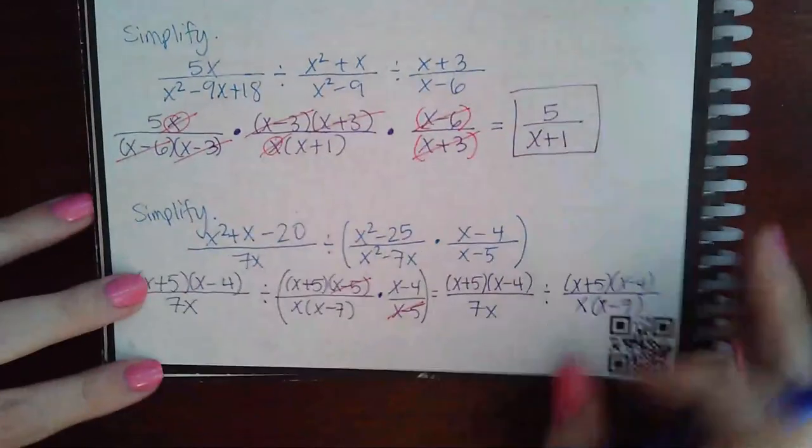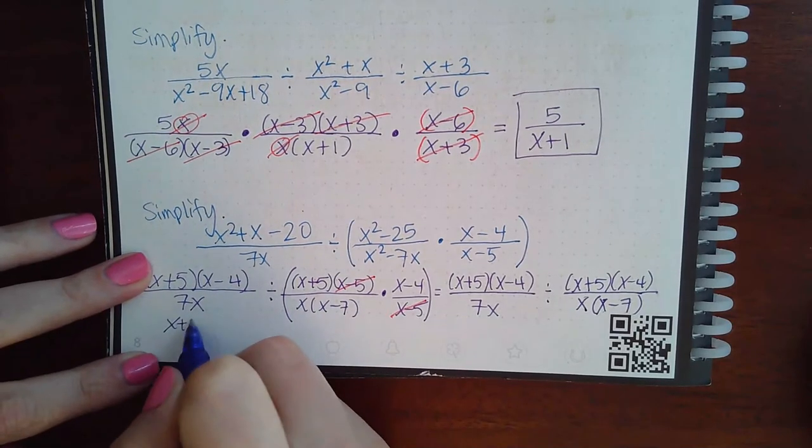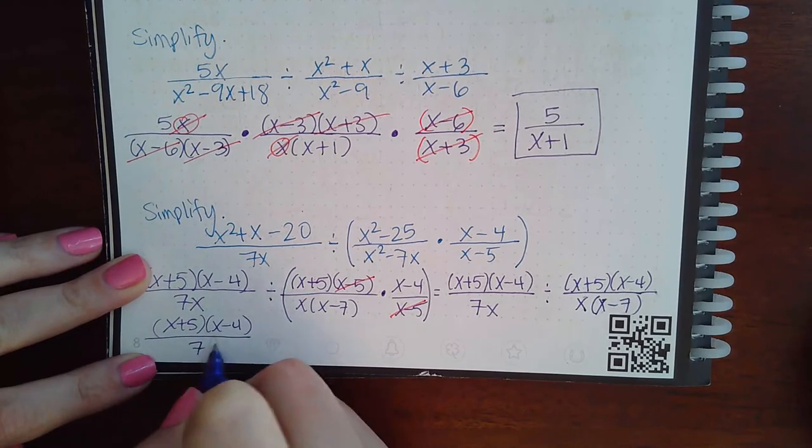And so I'm not quite done yet. Because now I have to do this division. So I'm going to keep x plus 5 and x minus 4 over 7x the same.